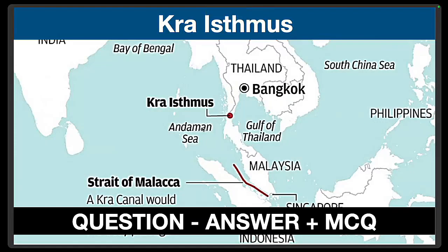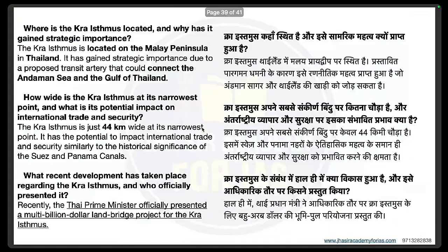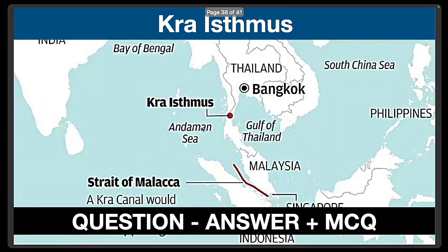Kra Isthmus — this is basically a location that we have got to see. Kra Isthmus is in the Malayan Peninsula, in Thailand. This is the location of the present question. The map is also kept on screen.